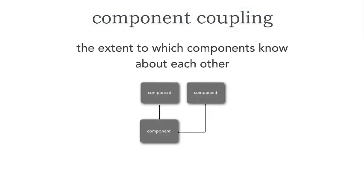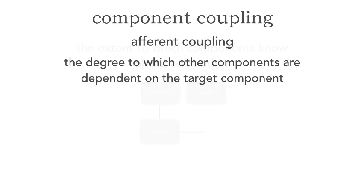When I talk about component coupling, what I'm really referring to is the extent to which components — the building blocks of our applications, in this case it might be package structures — know about each other. Let me show you three types of coupling, and then I want to show you four levels of coupling. Let's talk about the types first. The first is something called afferent coupling. This is the degree to which other components are dependent on you being the target component. This is also called fan-in.